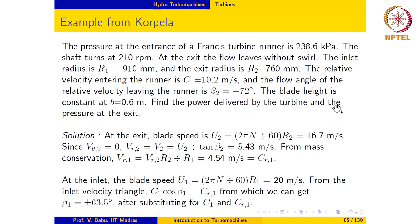Find the power delivered by the turbine and the pressure at the exit. At the exit, the blade speed may be calculated from the rotational speed and the outlet radius as U2 equal to 2πNR2 divided by 60 equal to 16.7 m per second.